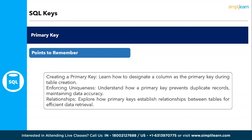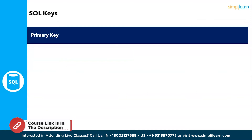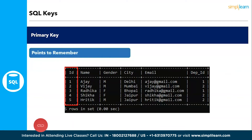The primary key ensures that duplication is not done and every entry or tuple is unique. Regarding relationships, primary keys establish relationships between tables for efficient data retrieval. In the example shown, the highlighted column in the employee data table is the primary key, which happens to be the employee ID.